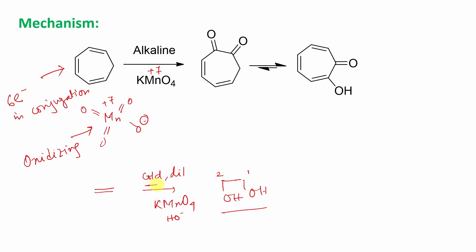But instead of cold and dilute, if you take concentrated permanganate, you can expect it could go to an aldehyde, dialdehyde, or further oxidation to carboxylic acid. But here, looking at this condition — it's alkaline permanganate — further oxidation is actually difficult. I shall explain after some time.